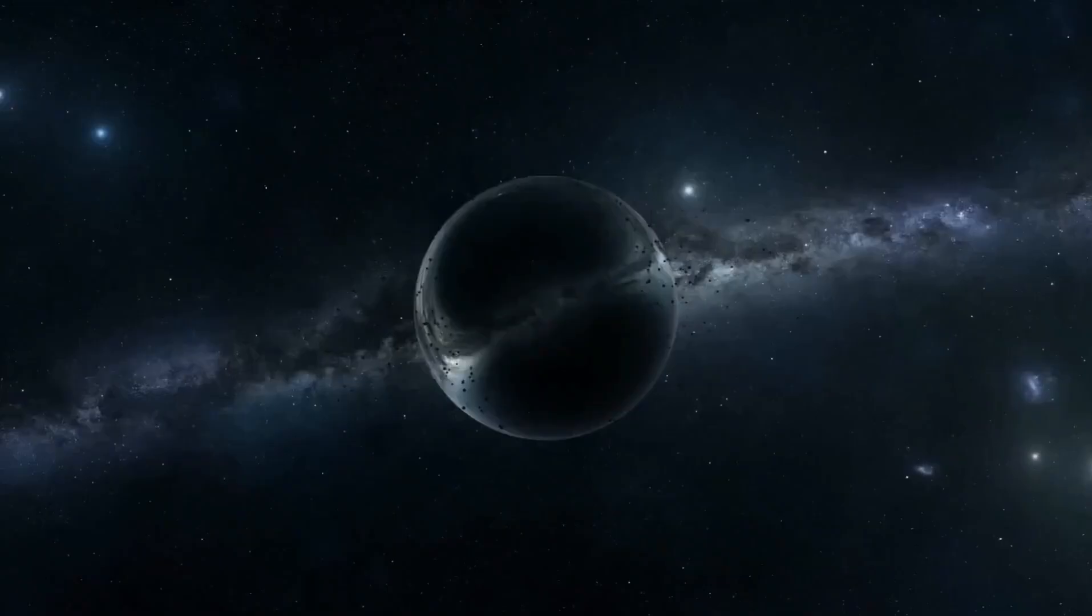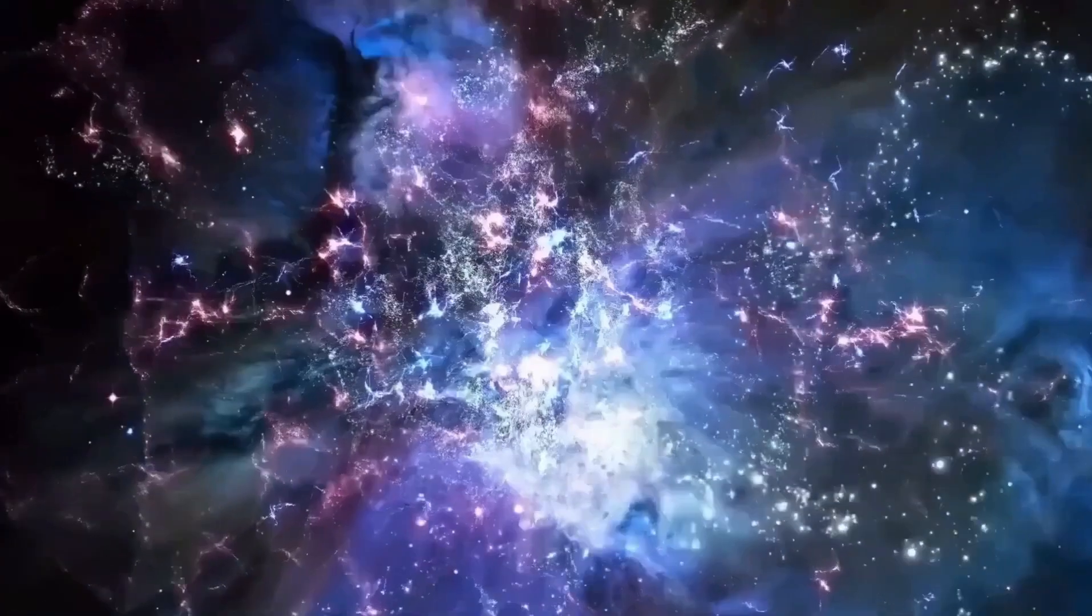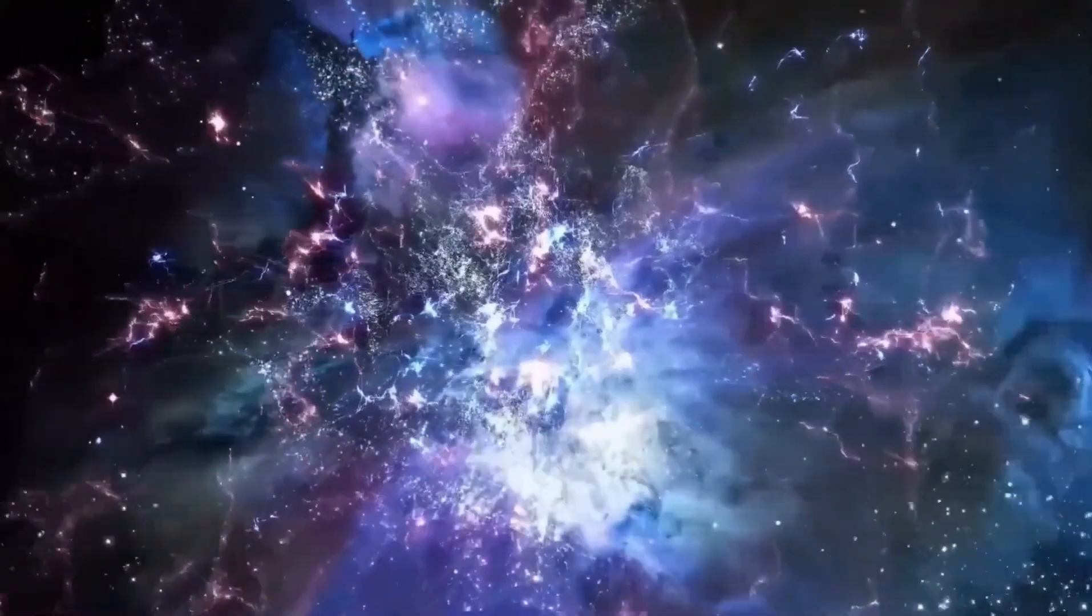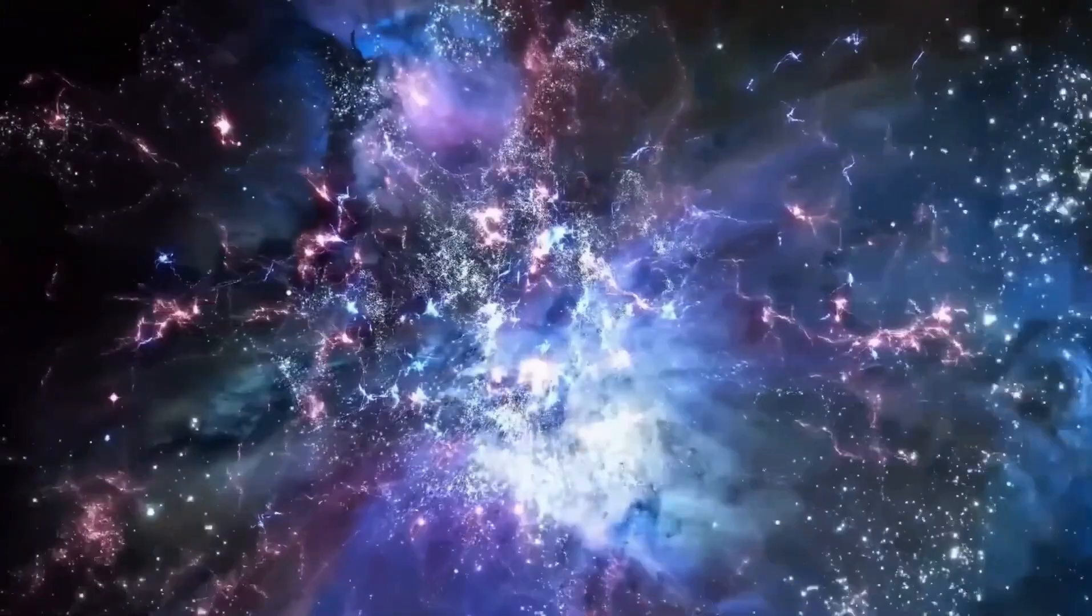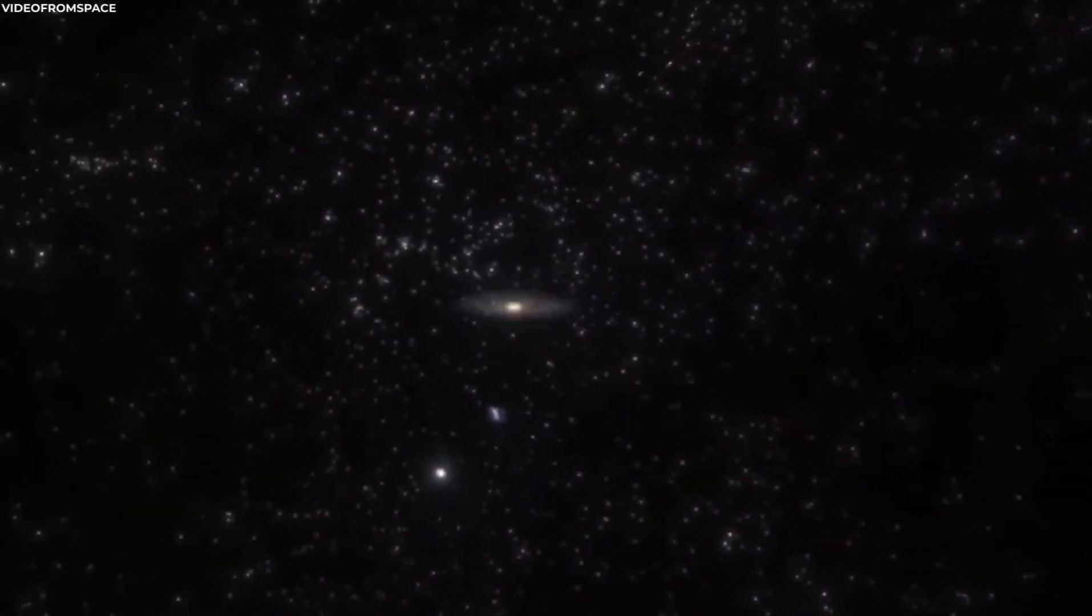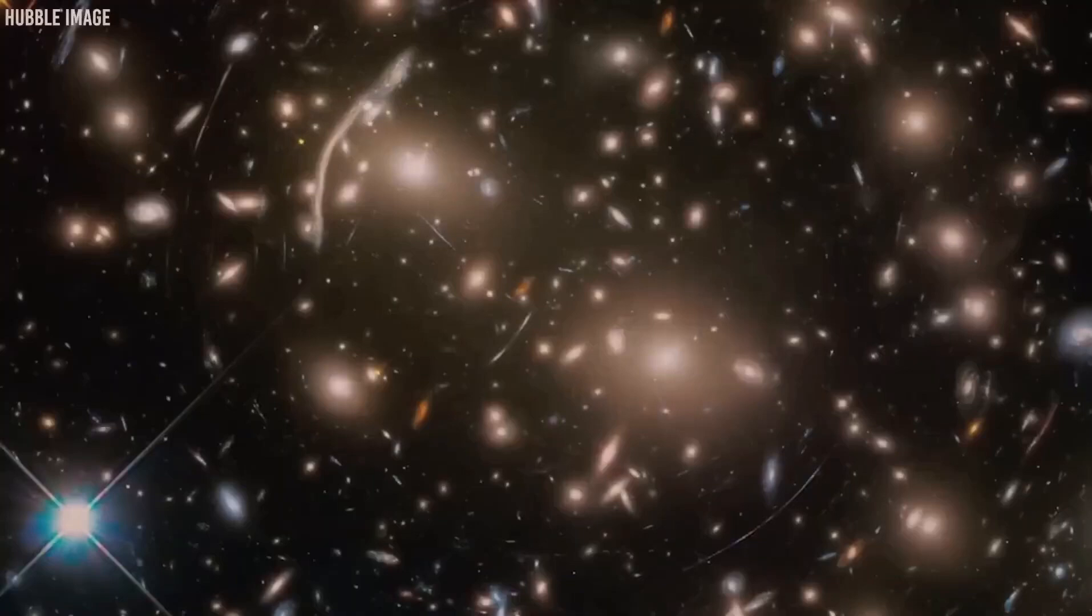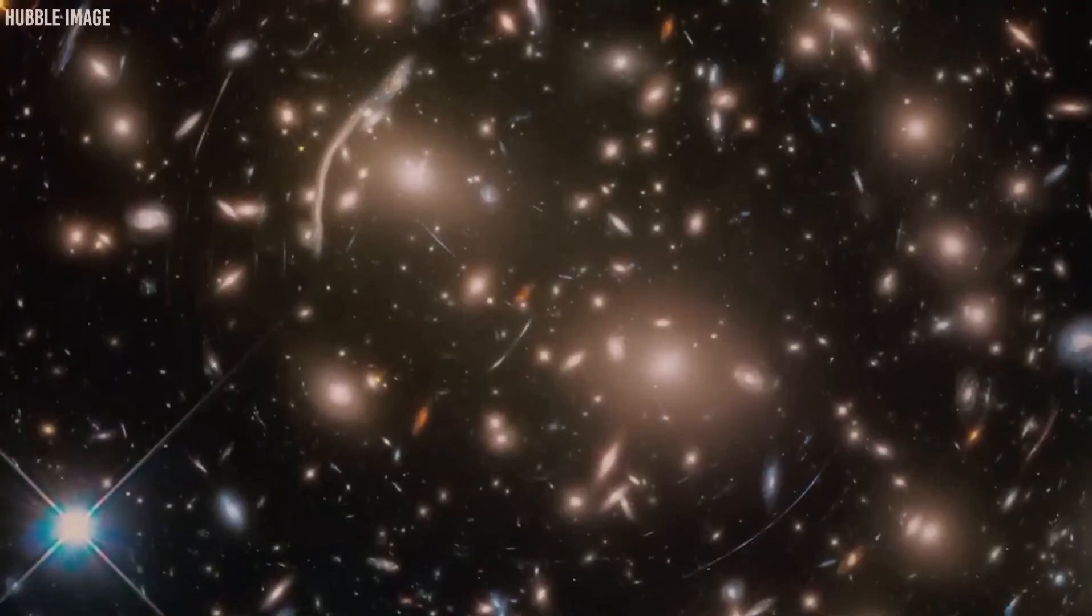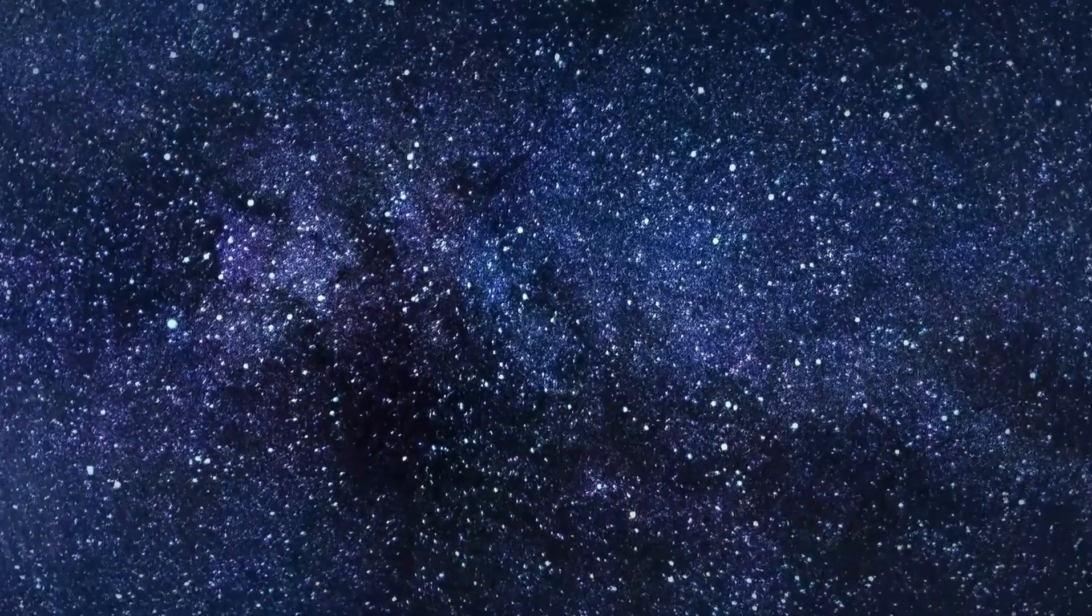When we talk about the edge of the universe, it's essential to understand the concept of the observable universe. The observable universe includes everything that we can see, measure, and study from Earth or our space-based telescopes at the present time. It consists of stars, galaxies, and other celestial objects within our observational reach.